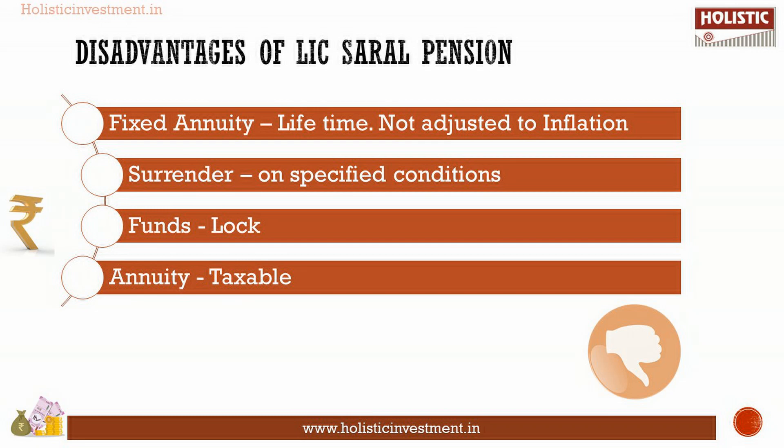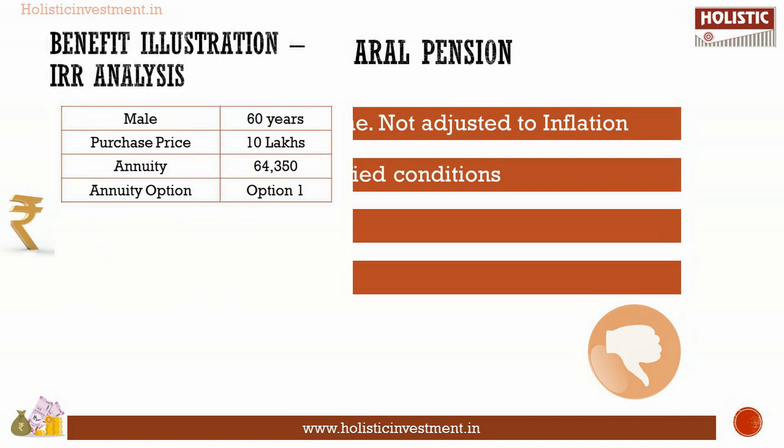The disadvantages are: the annuity is fixed throughout the lifetime and not adjusted to inflation. The policy can be surrendered only under specified conditions. Your funds get locked, and the annuity is fully taxable.